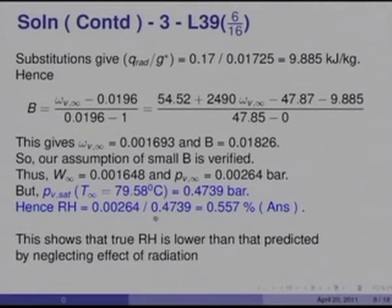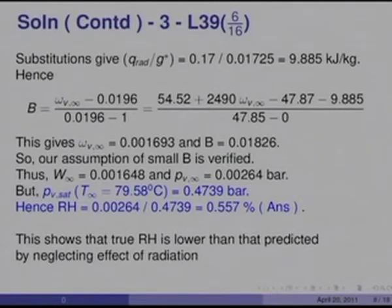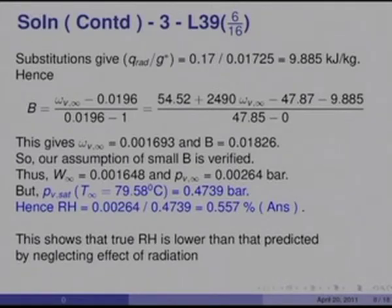These calculations are important because when so-called dry air is supplied, it is never completely dry — there are small fractions of moisture, and accounting for radiation shows a significant effect: from 0.746% down to 0.557% relative humidity. With this, we turn to the next problem.